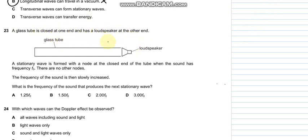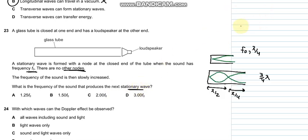Question number 23 says that a glass tube is closed at one end and has a loudspeaker at the other end. A stationary wave is formed with a node at the closed end of the tube, and the sound has frequency F0. For the fundamental frequency, the wavelength is lambda by 4.